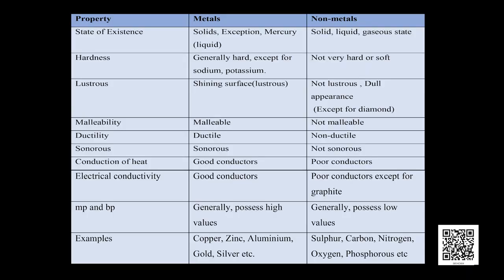We have learnt a few important properties of metals and non-metals — let us recall them. Metals are hard, lustrous, malleable, ductile, sonorous and good conductors of heat and electricity. Examples are copper, zinc, aluminium, gold, silver, etc. Non-metals are dull and soft in appearance. They break down into a powdery mass when hammered, so they are not malleable. They cannot be drawn into thin wires, hence they are non-ductile. They are not sonorous and do not conduct heat and electricity. Examples are sulfur, carbon, nitrogen, oxygen, phosphorus, etc.